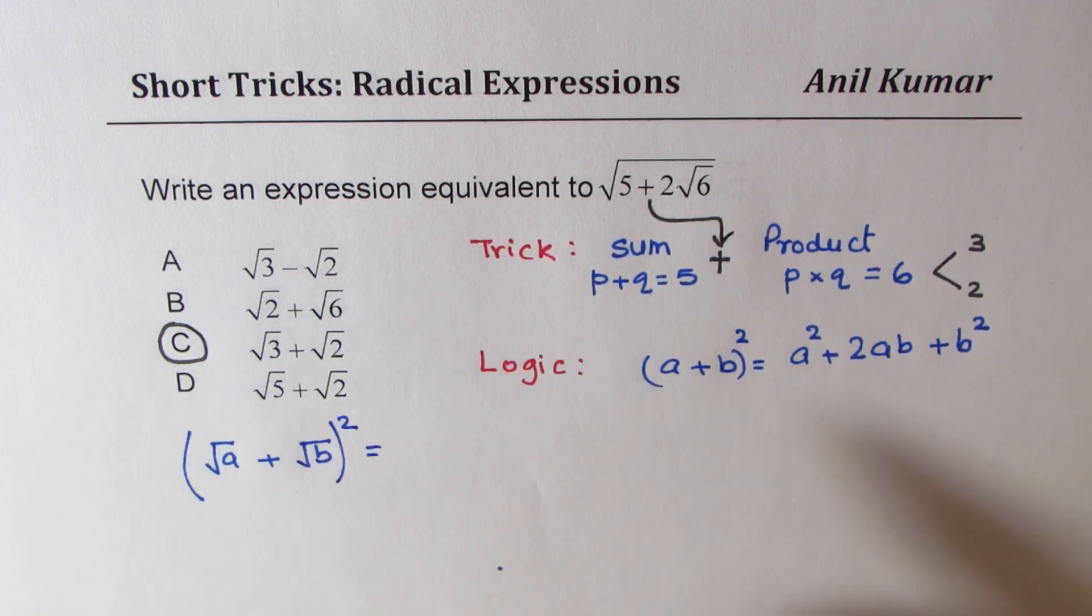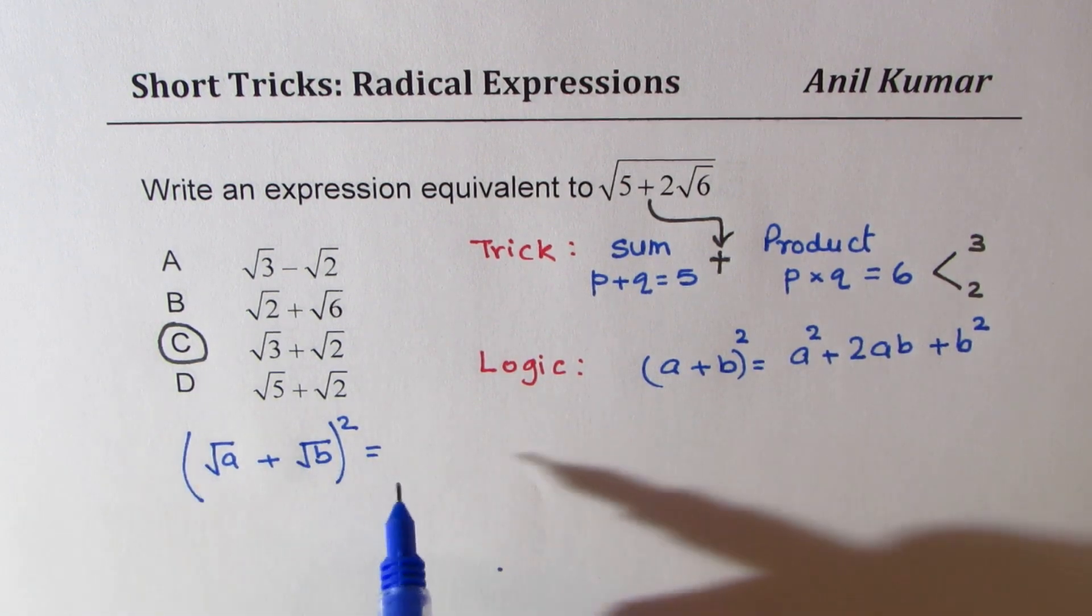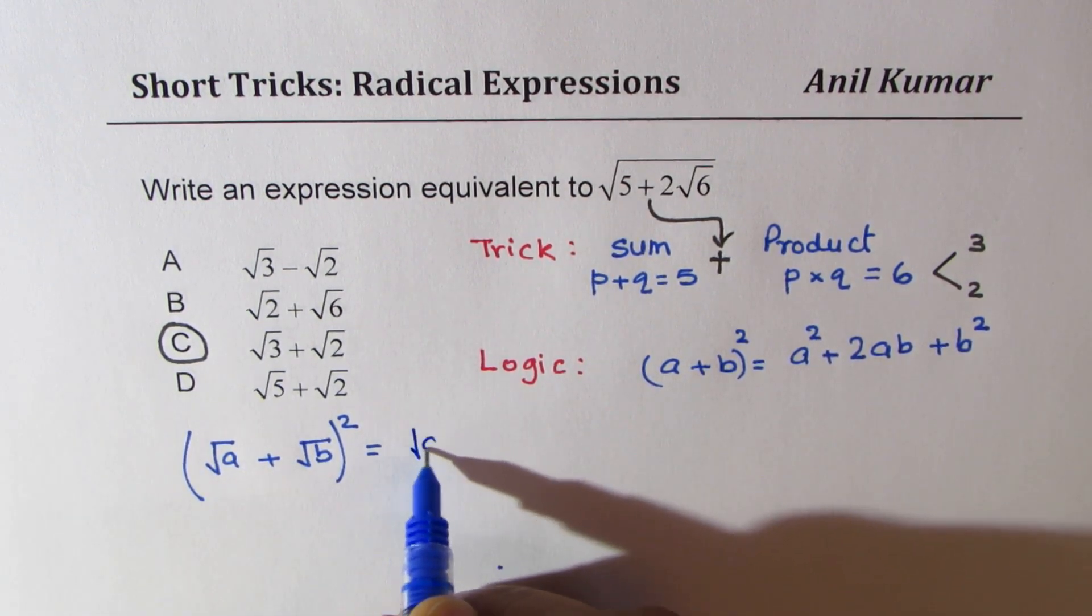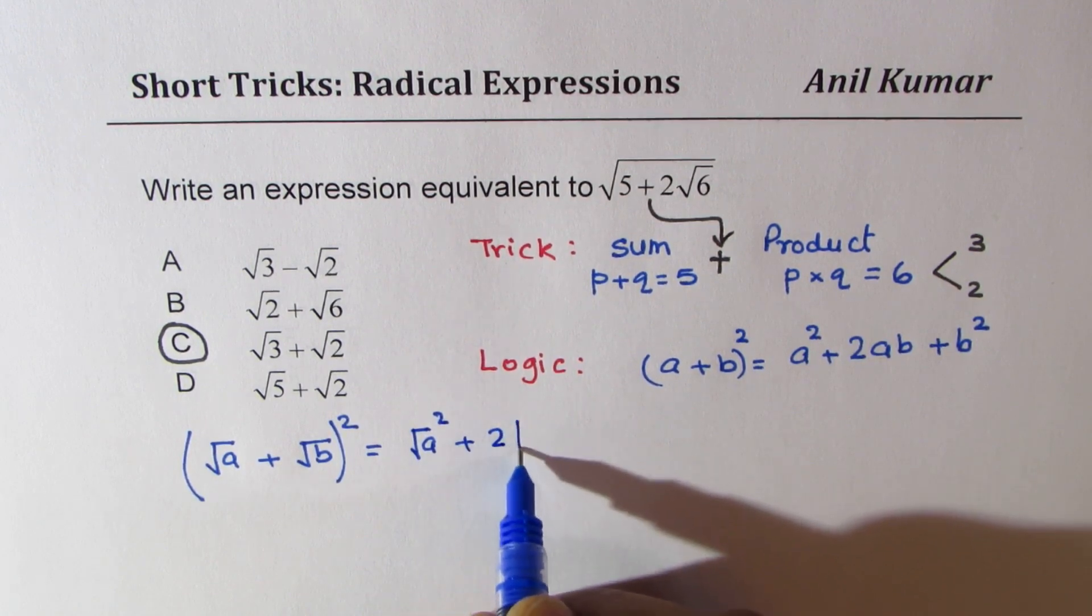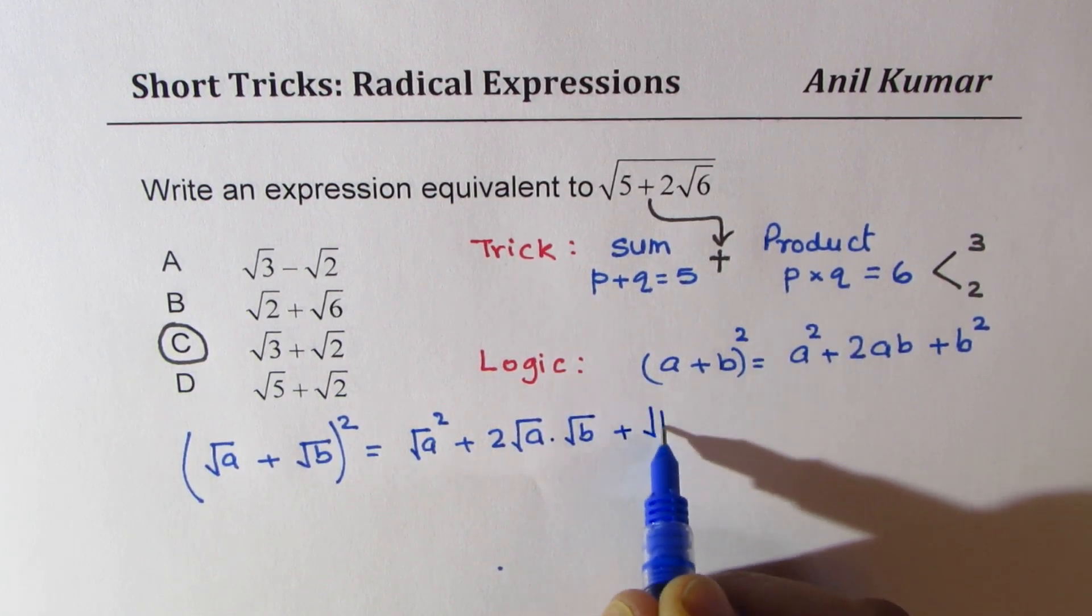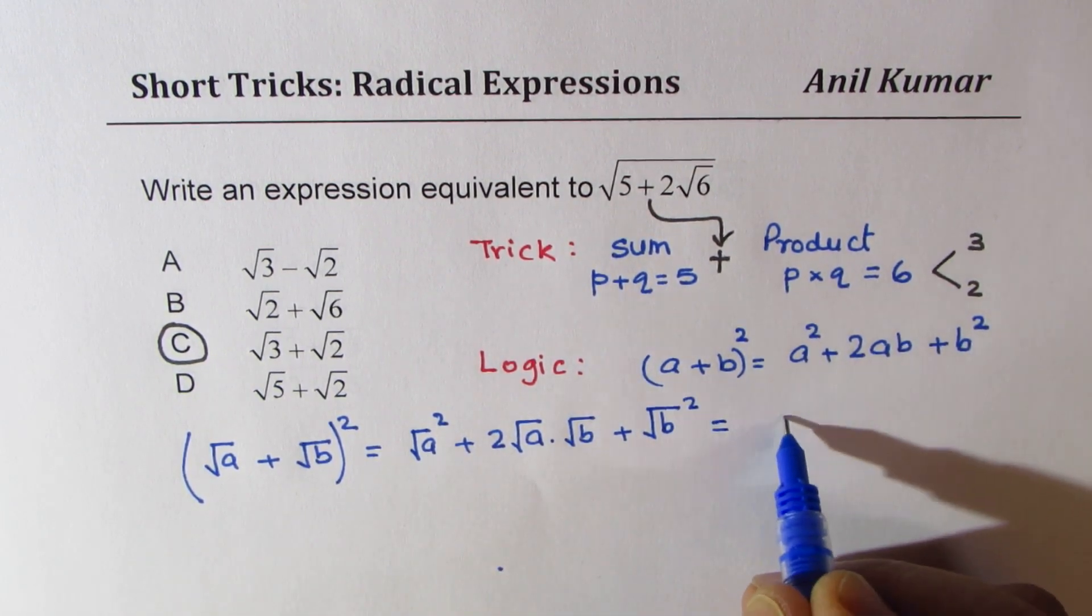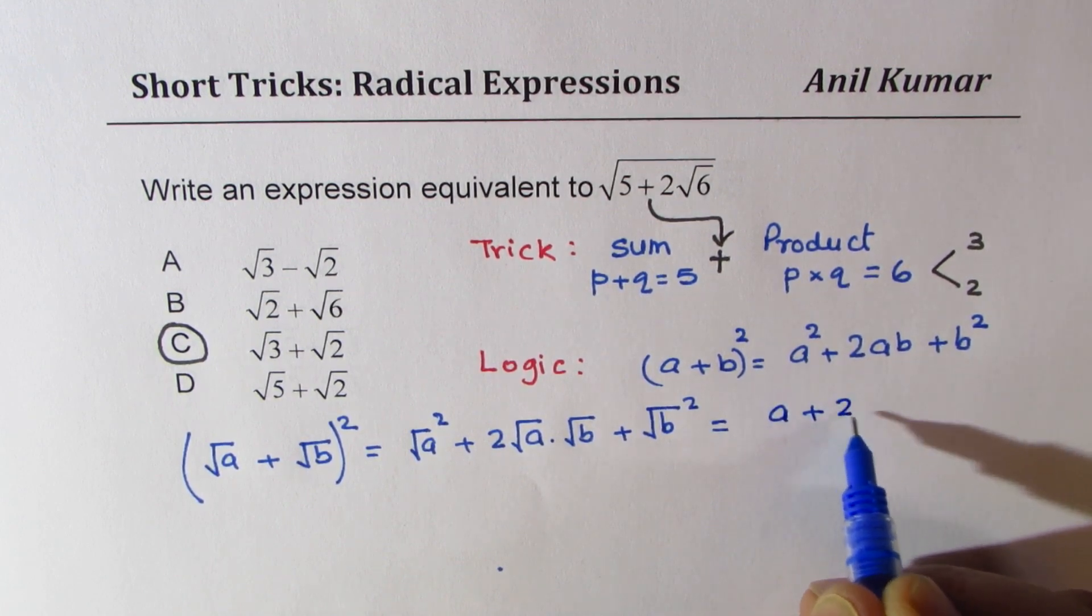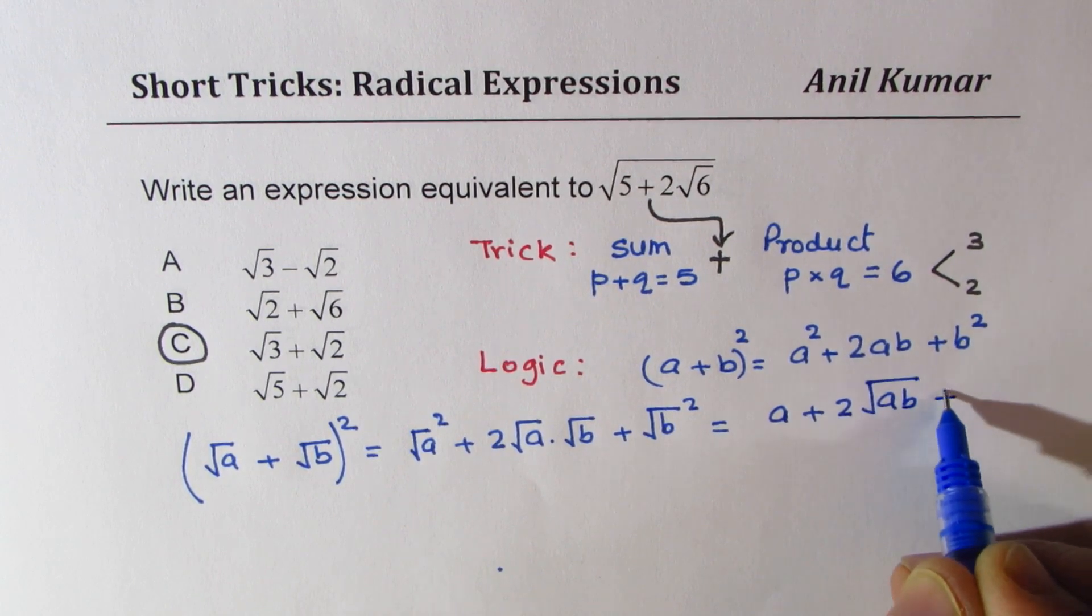Since these are all square root terms, instead of A plus B whole square, let's look into this term. So it is square of square root A plus 2 times square root A times square root B plus square of square root B, which is A plus 2 square root A times B plus B.